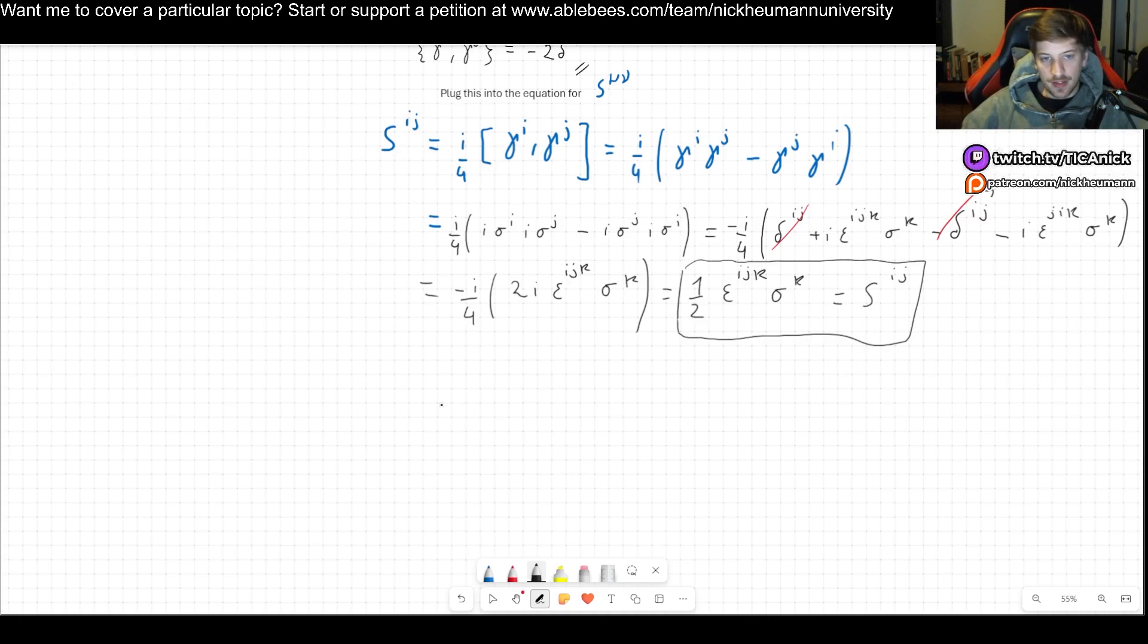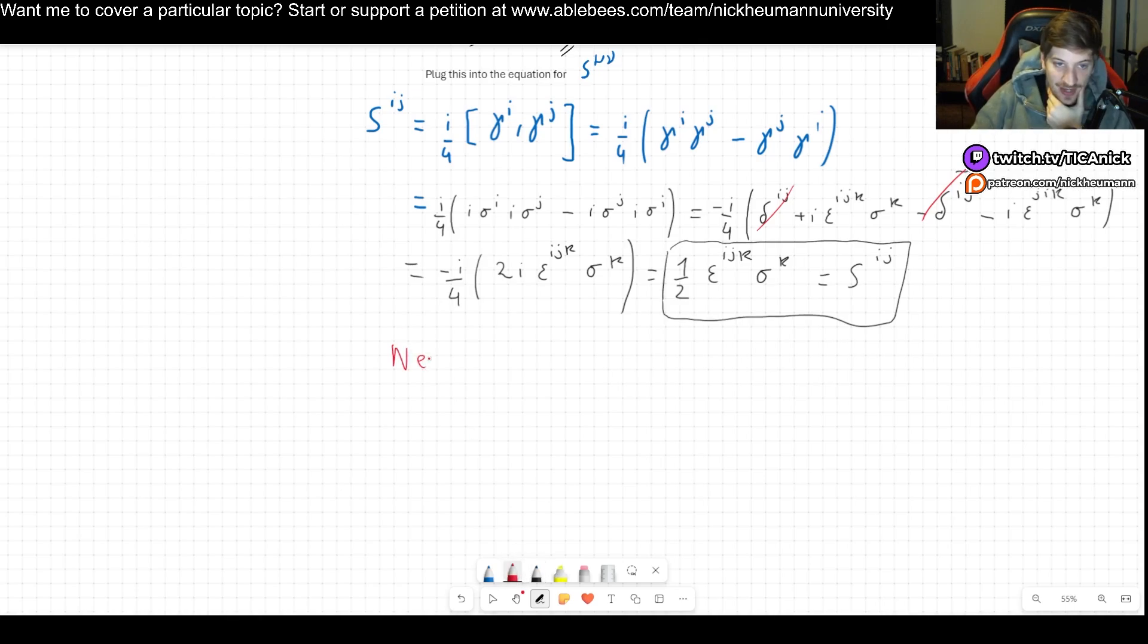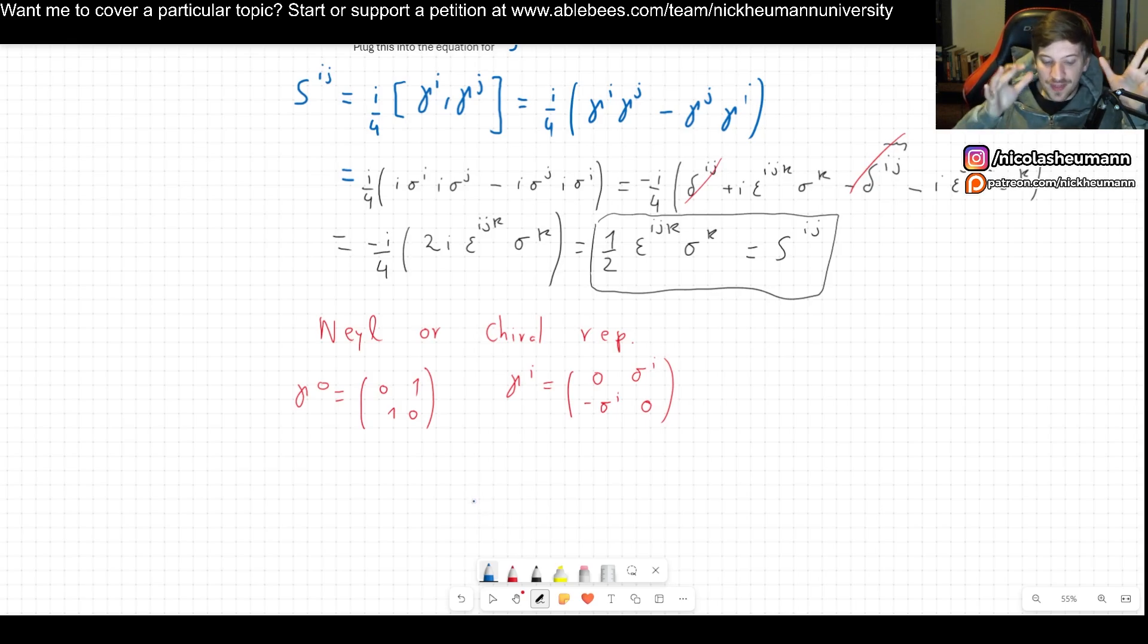Now, we are going to be working with the Weyl or chiral representation of the gamma matrices. This is called the Weyl or the chiral, it's the same, representation. We will see why it's called that way very soon - this representation will allow us to see the chirality very easily, or to find the Weyl equations very easily, which we'll do in one or two videos from this. What we have is gamma^0 = [[0,1],[1,0]] and gamma^i = [[0, sigma^i], [-sigma^i, 0]].